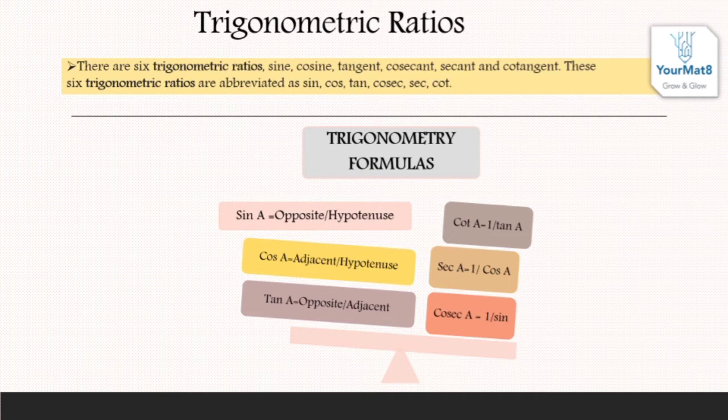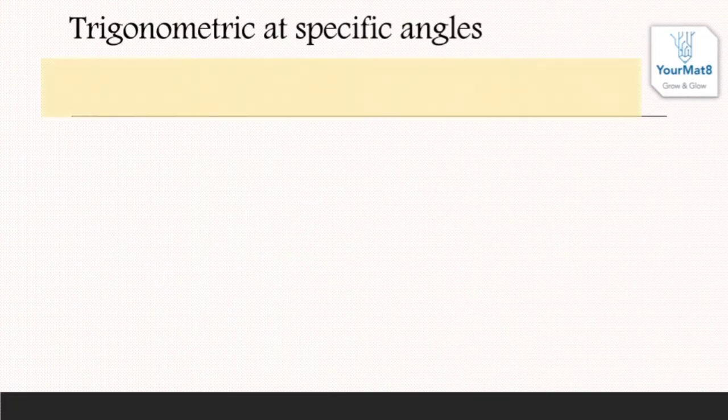Trigonometric at specific angles. The ratio of the sides in a right triangle with respect to some acute angle are called trigonometry for specific angles.